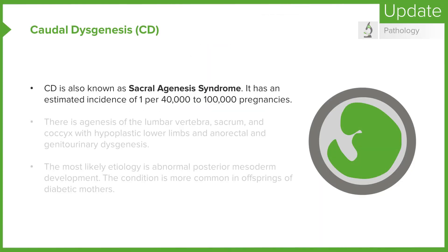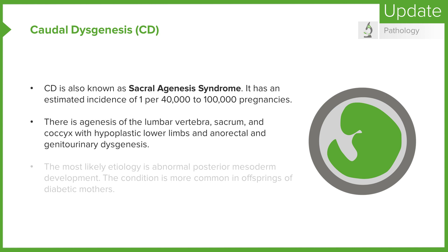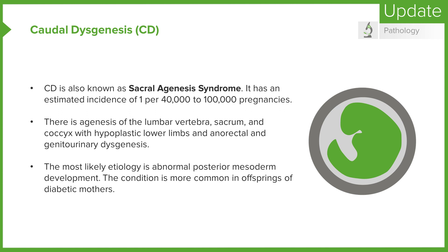Another possible defect associated with gastrulation is caudal dysgenesis, also known as sacral agenesis syndrome. It has an estimated incidence of 1 per 40,000 to 100,000 pregnancies. There is agenesis of the lumbar vertebra, sacrum, and coccyx, with hypoplastic lower limbs and anorectal and genitourinary dysgenesis. The most likely etiology is abnormal posterior mesoderm development, and the condition is more common in offspring of diabetic mothers.